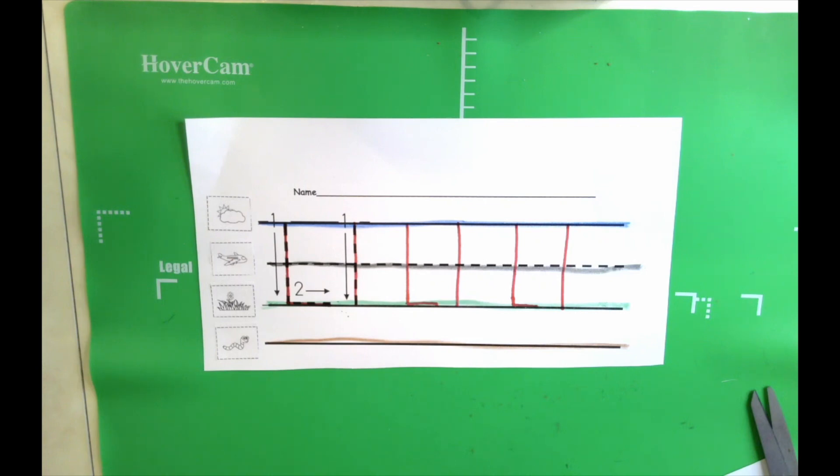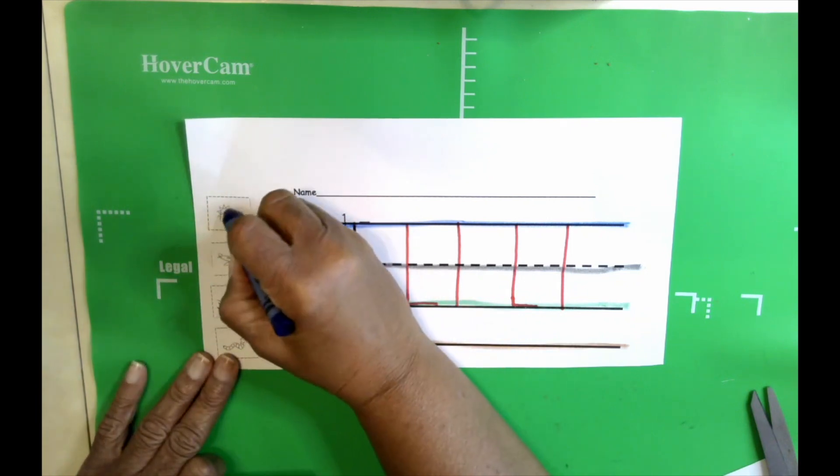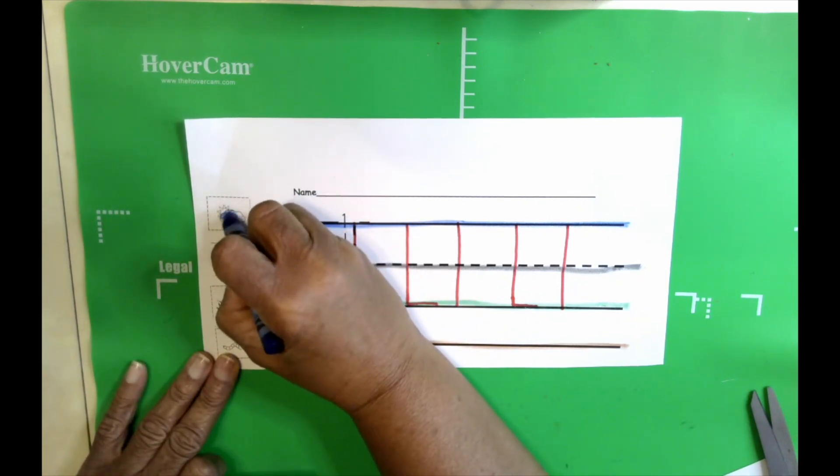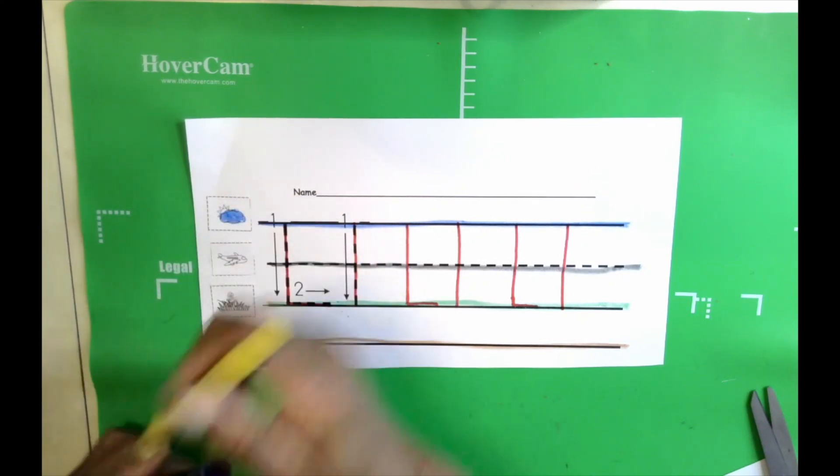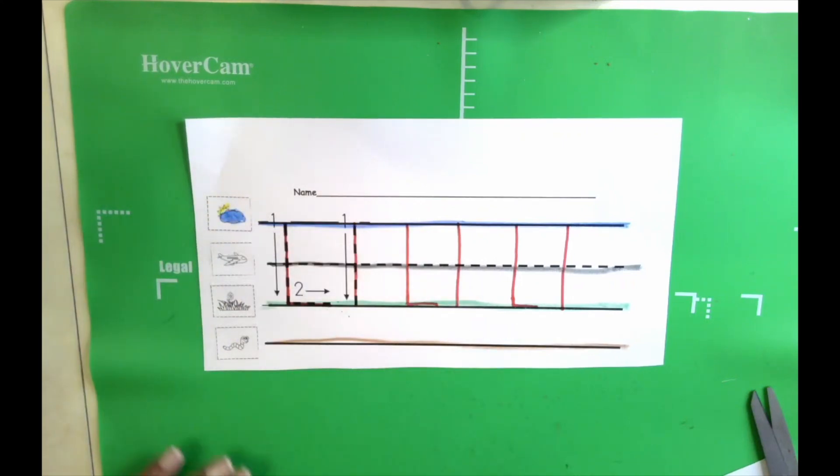Okay. Now it's time to color our pictures. The skyline gets blue. The cloud. We're going to color it blue. Just like we colored the line blue.